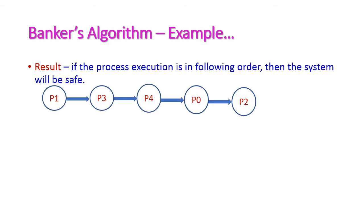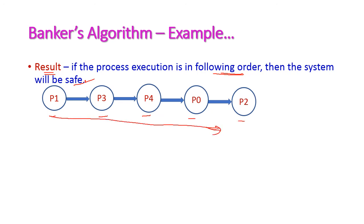Finally, we write the result. If the processes execute in the following order, the system will be safe: first P1, then P3, then P4, then P0, then P2. If the processes execute in this order, there will be no chance of deadlock — the system will be in a safe state.